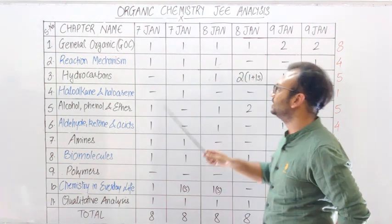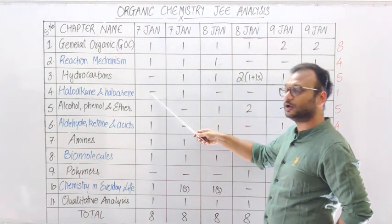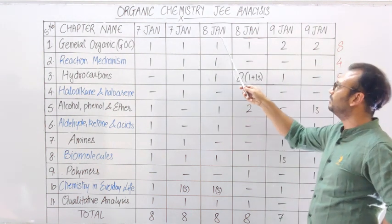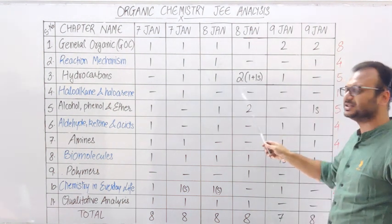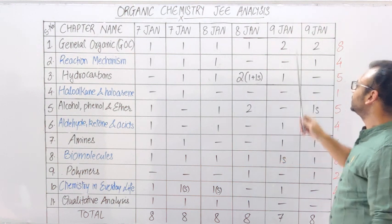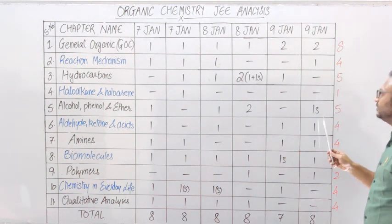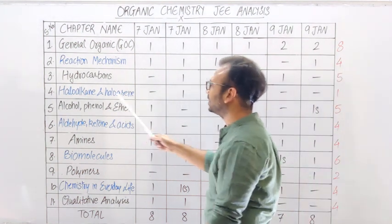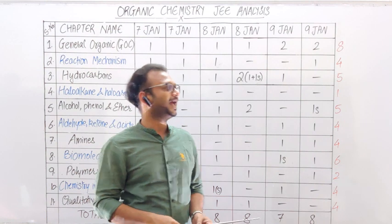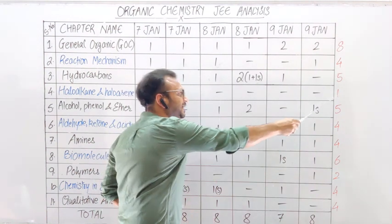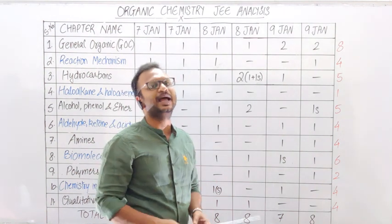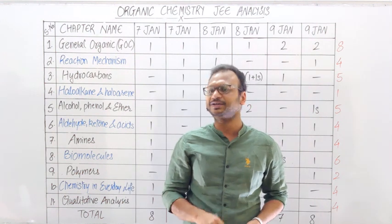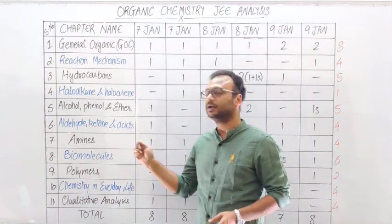फिर आता है Haloalkanes और Haloarenes। 7th January Morning Shift में कोई question नहीं था, Evening Shift में 1 question, 8th January Morning और Evening Shift दोनों में कोई question नहीं था, 9th January Morning और Evening Shift में भी कोई question नहीं था। Total 6 papers में सिर्फ 1 question। यानि पूरे organic में अगर कोई least important chapter है weightage वाईज, तो वो है Haloalkanes और Haloarenes।